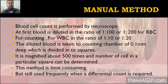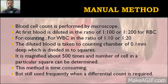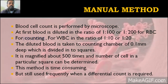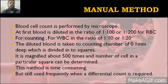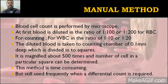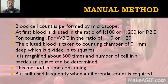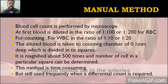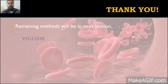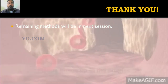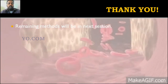The counting chamber consists of many squares. We count the blood cells in a particular square and then calculate the total count based on the number of squares. This method is time-consuming but is still used in hospitals for differential count. We can approximately calculate the count of red blood cells, white blood cells, and platelets. The remaining two counting methods will be covered in the next session.